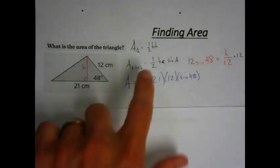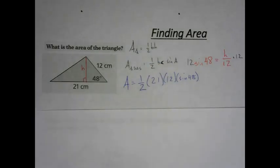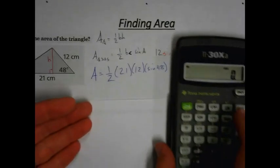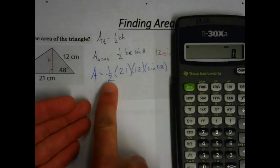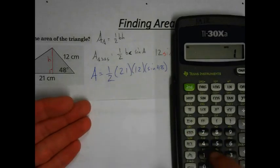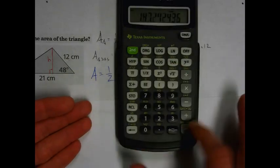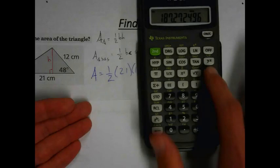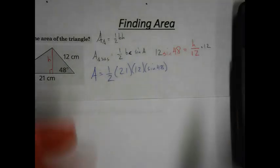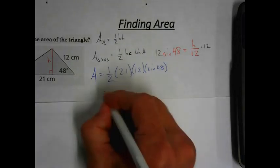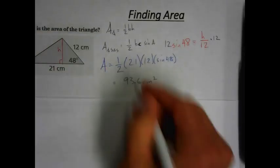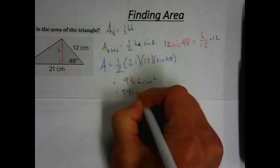You don't have to memorize this new formula if you don't want to — the rest is calculator work. We make sure everything is on the right setting, then multiply: 21 times 12 times sine of 48, then divide by 2. That gives us 93.6 square centimeters — or, to the nearest square centimeter, 94 square centimeters. The rest is just figuring out what the question is asking.